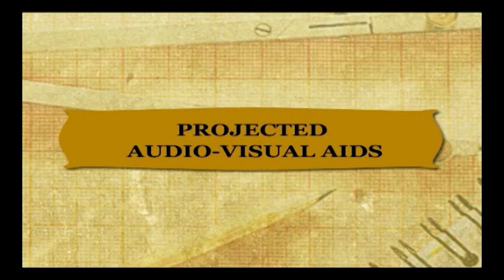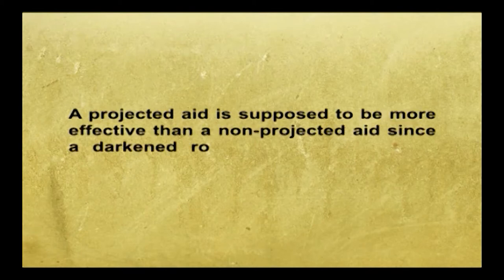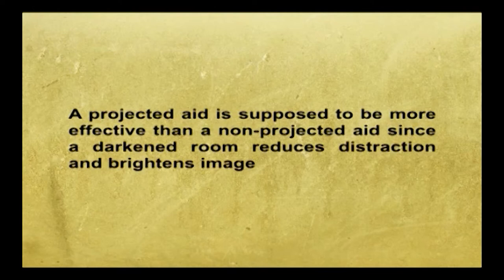When a projected aid is used, an enlarged image of the material is projected onto a screen kept at a distance from the projector. The room is either totally or partially darkened. A projected aid is considered more effective than a non-projected aid since a darkened room reduces distraction and brightens images on the screen, securing the attention of the audience. Examples of projected audiovisual aids include overhead projectors, slides, film strips, films, etc.